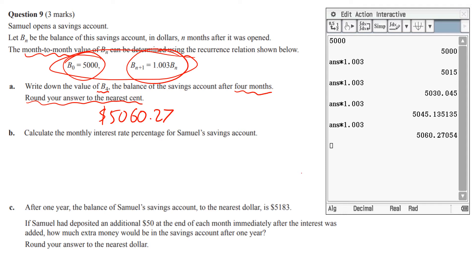Now it says calculate the monthly interest rate percentage for Samuel's savings account. Now that's related to this number up here which is actually in two parts. I'm going to do that in the principal, that's the one, and then the other part which I'm going to show in blue, that's the interest rate but not as a percentage. So you take that number which is the 0.003.